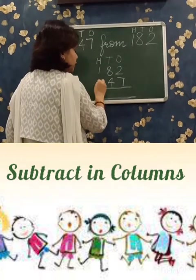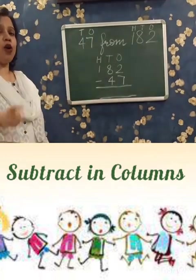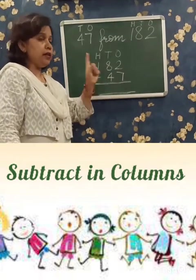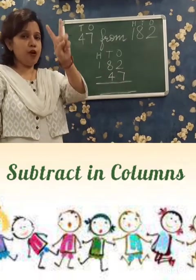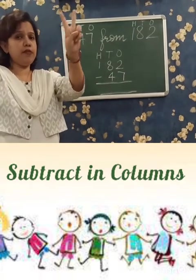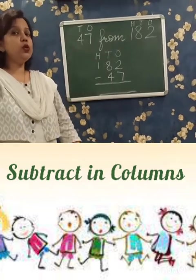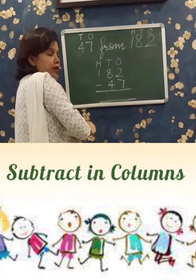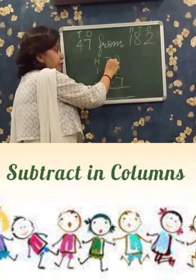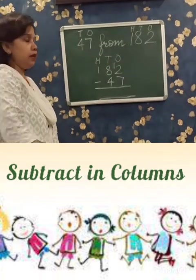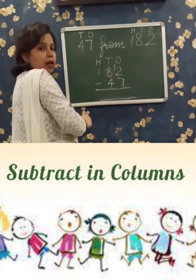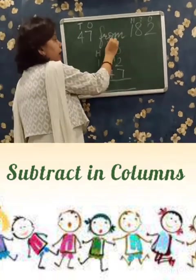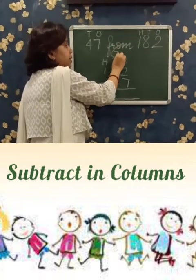Give the subtraction sign and always begin from the 1's place. 2 minus 7 — from 2, can you take out 7? No. So you will borrow. Take 1 from the friend: 8 will give 1 here, making it 12 in the 1's place. 8 has given 1, so 8 becomes 7.